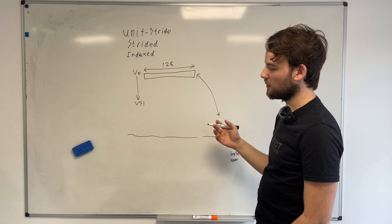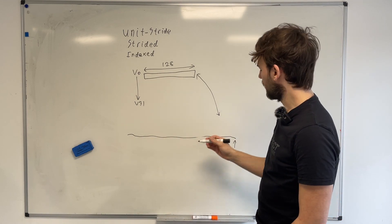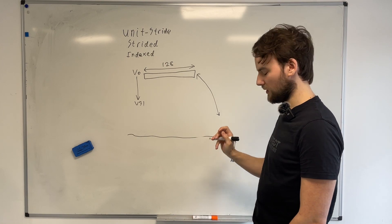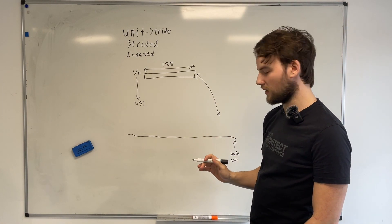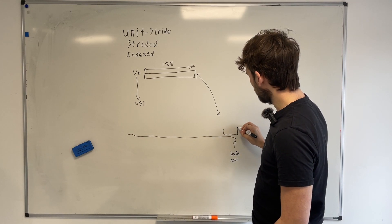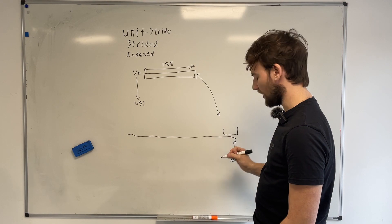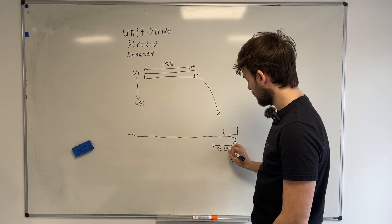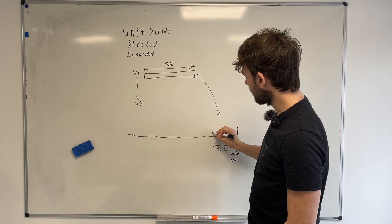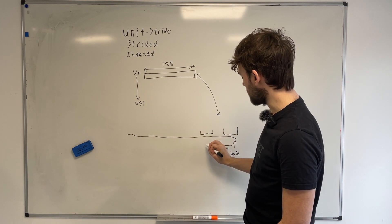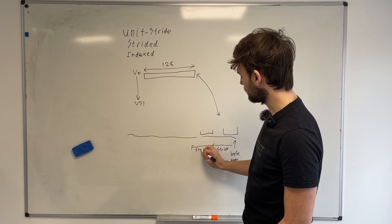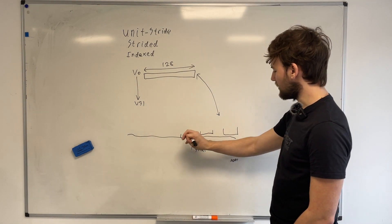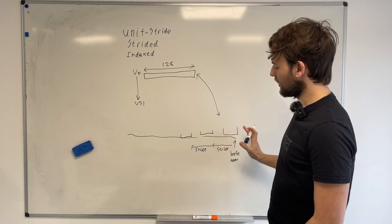The strided case is similar, but has one extra feature. And the difference is that the accesses aren't based on your vector register width, they're based on elements. So you still have a base address, just like unit stride. However, each of these instructions also takes an additional input called the stride. And essentially, the base address of each element is separated by one of these strides.